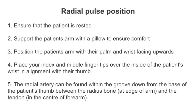To obtain the correct radial pulse position for the blood pressure assessment, firstly ensure that the patient is well rested. Support the patient's arm with a pillow to ensure comfort. Position the patient's arm with their palm and wrist facing upwards. Place your index and middle fingertips over the inside of the patient's wrist in alignment with their thumb. The radial artery can be found within the groove down from the base of the patient's thumb, between the radius bone at the edge of the arm and the tendon in the centre of the forearm.